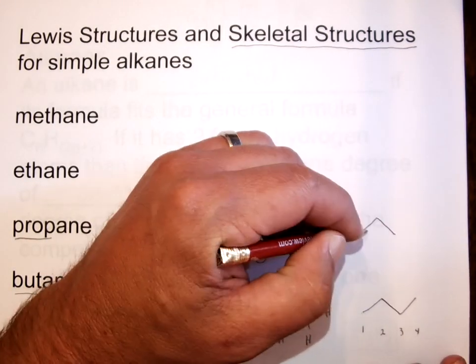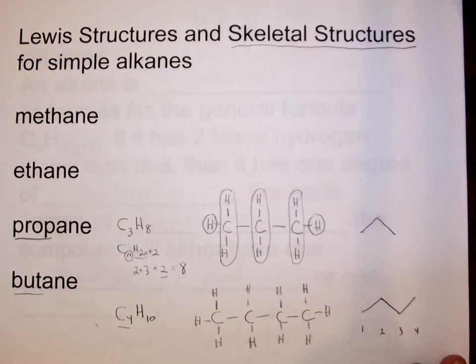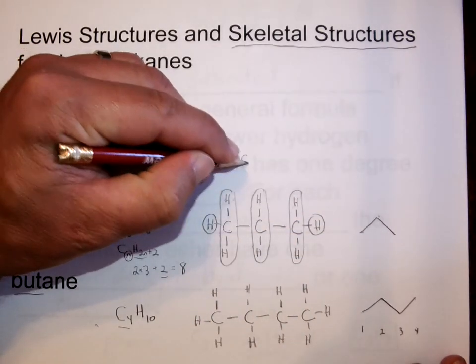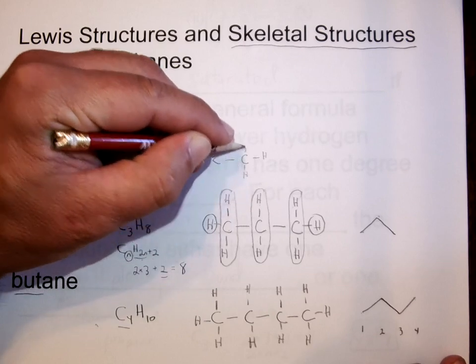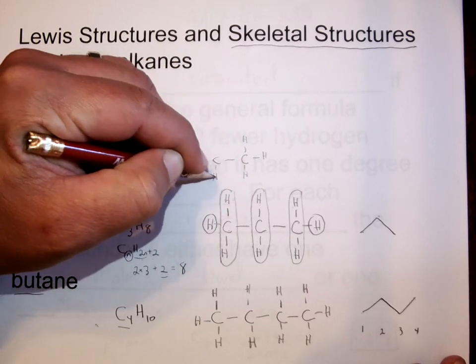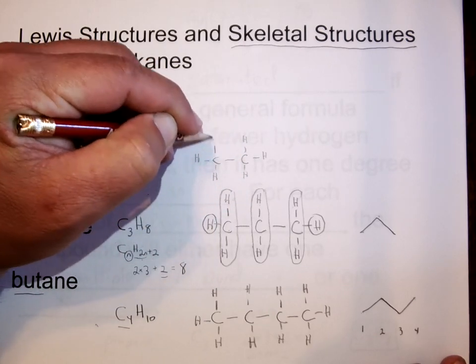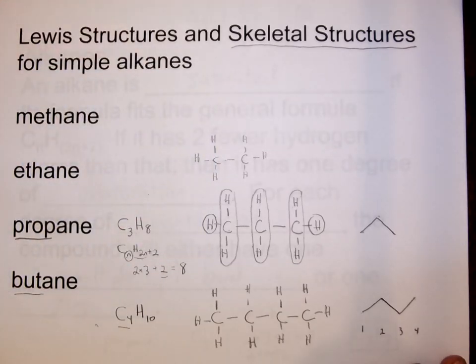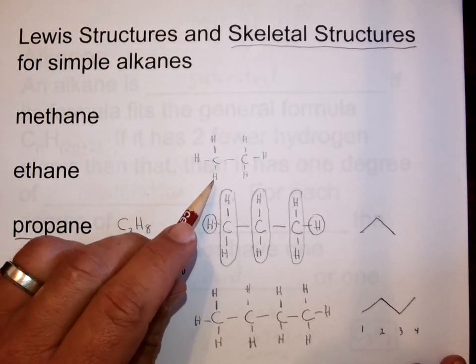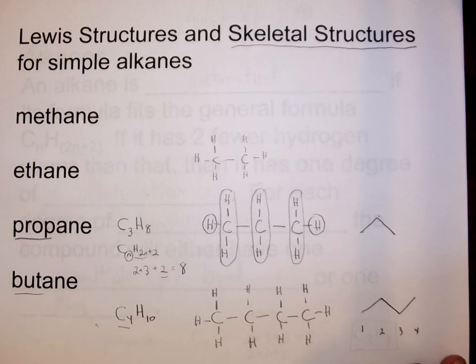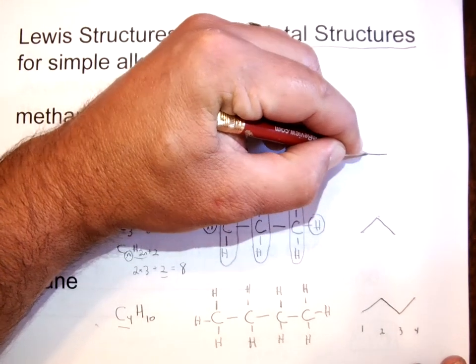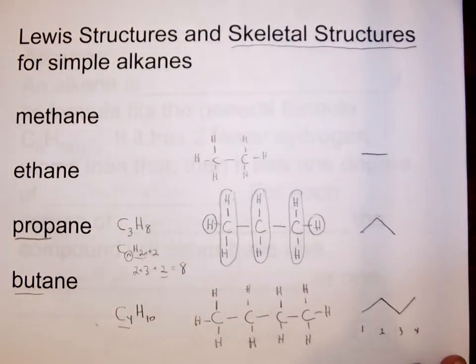So the skeletal structure for butane looks like this. Propane, three carbons would look like this. Ethane, C2H6. It's almost not worth trying to draw a skeletal structure for this for a couple reasons. One is just drawing the whole Lewis structure is very short. There's only eight atoms in there. But then the skeletal structure would just be a line with the two ends, and that would be easily mistaken for just a dash or line on the page and not a skeletal structure.